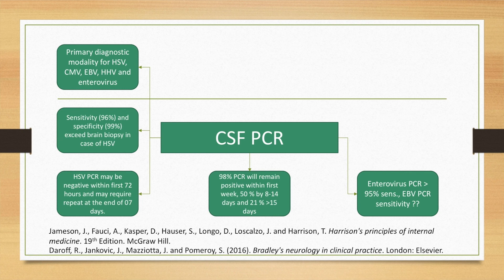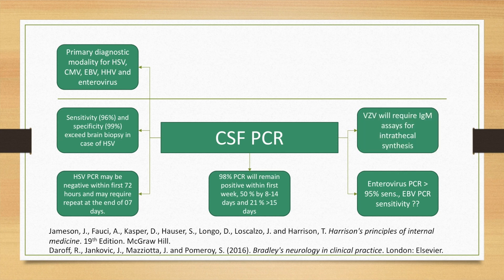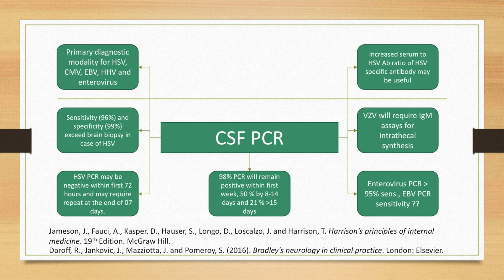The sensitivity for enterovirus PCR is more than 95%, but for Epstein-Barr virus the sensitivity for PCR is not known. Varicella zoster virus will require IgM assays for intrathecal synthesis, and an increased serum-to-HSV antibody ratio for herpes simplex virus may be useful.